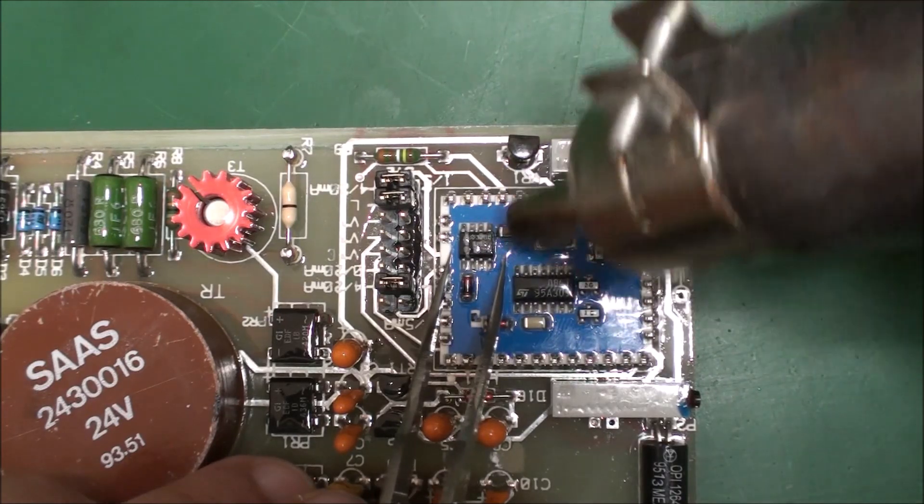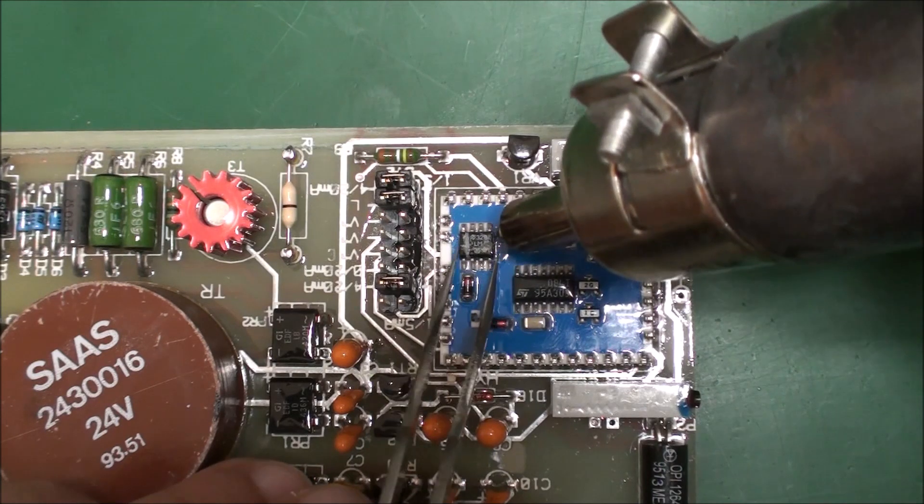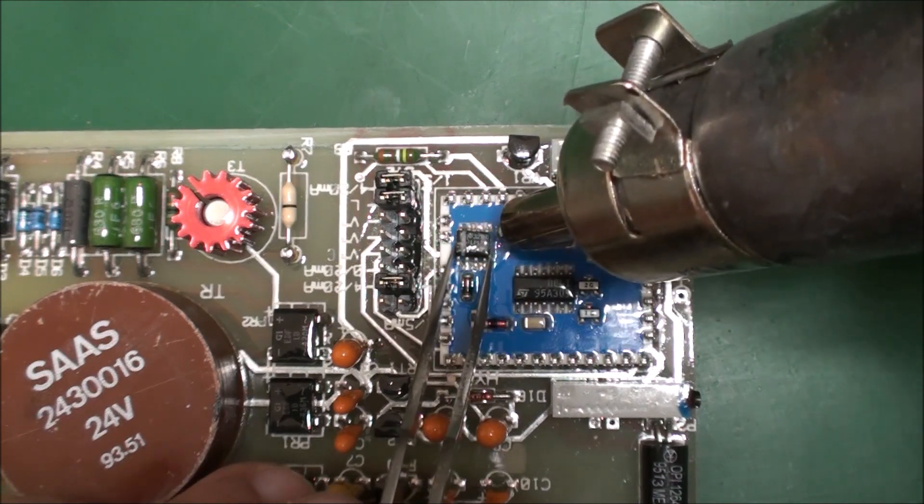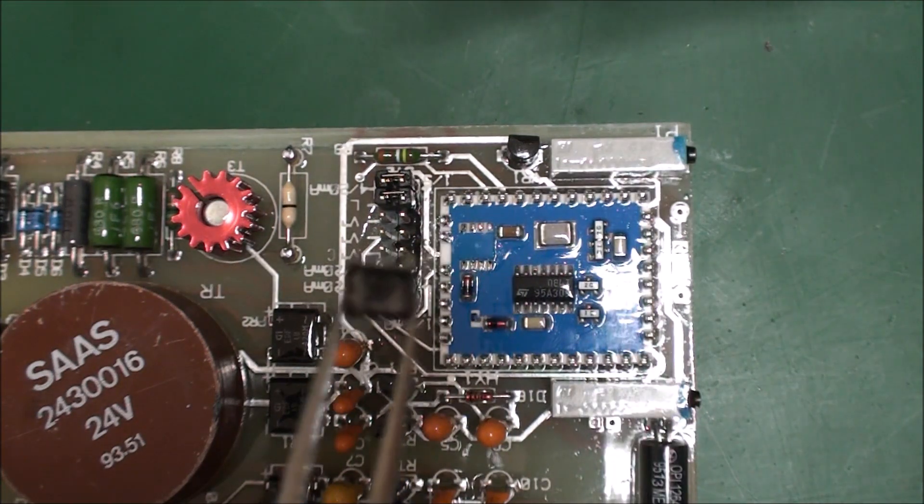This is the LM358M, M like for military component according to the datasheet. This circuit consists of two op-amps designed to operate from a single power supply over a wide range of voltage.